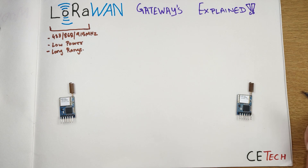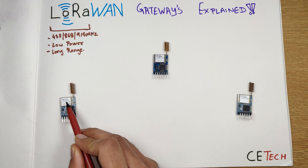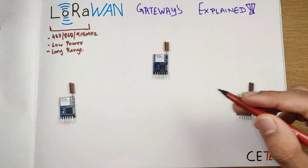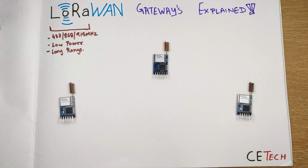LoRa is not limited to point-to-point communication — it has a broadcasting mode as well, wherein the information transmitted by one module can be read by multiple other modules simultaneously. And this number is not limited to two; you can have as many modules as you want receiving the information transmitted by a LoRa transmitter.